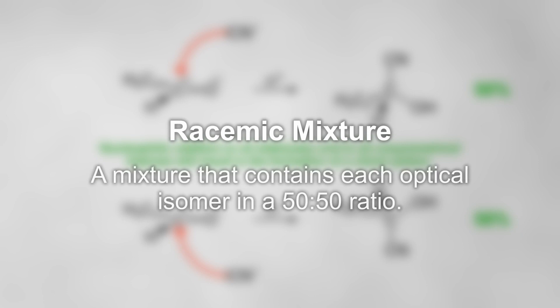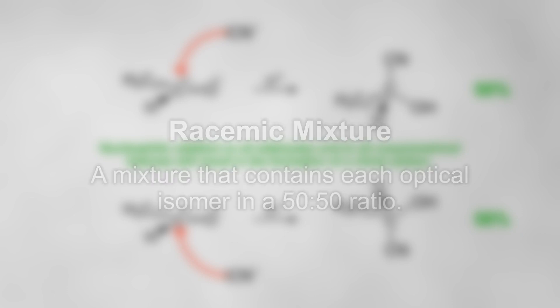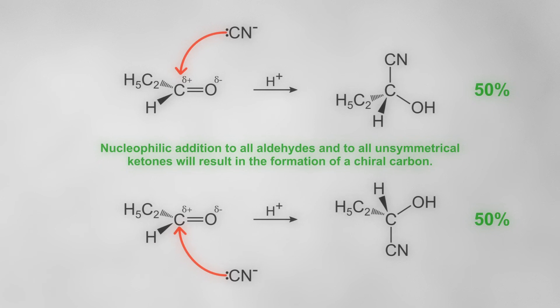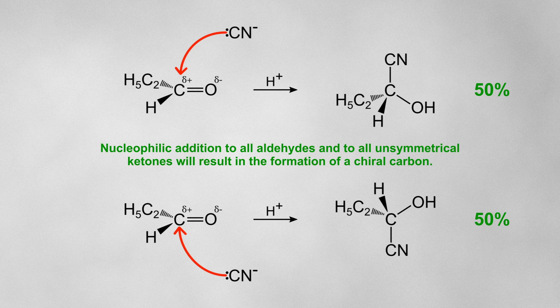This results in a racemic mixture, which is a mixture that contains each optical isomer in a 50-50 ratio, so that overall the mixture is not optically active, as both isomers effectively cancel each other out.